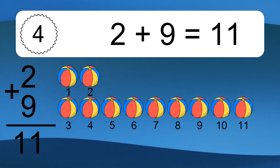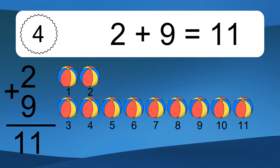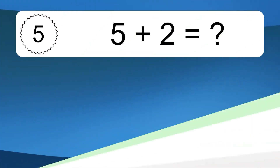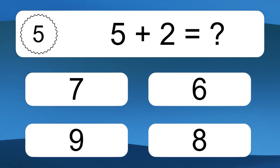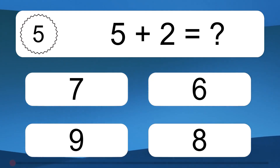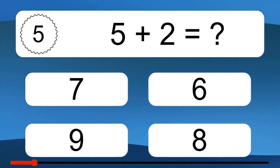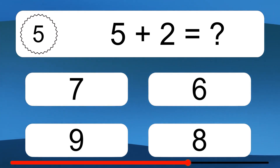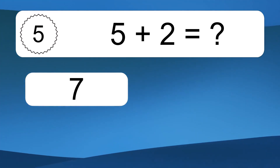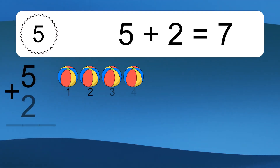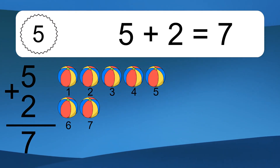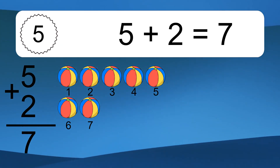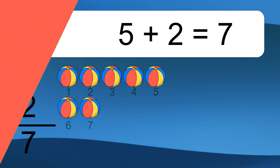2 plus 9 equals what? Let's count it: 1, 2, 3, 4, 5, 6, 7, 8, 9, 10, 11.